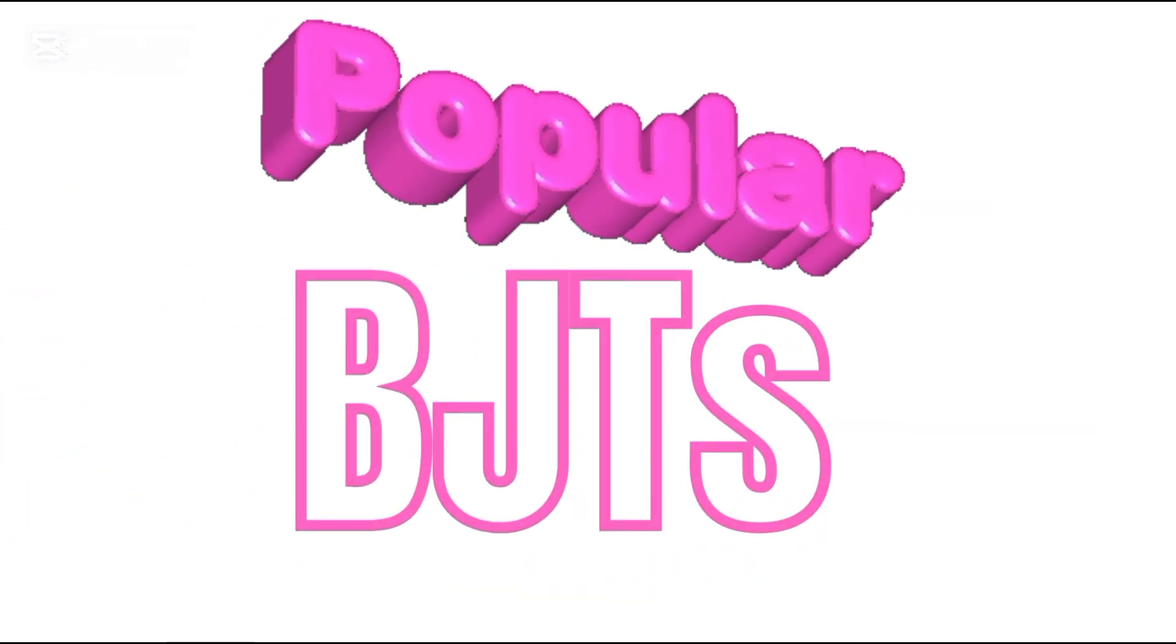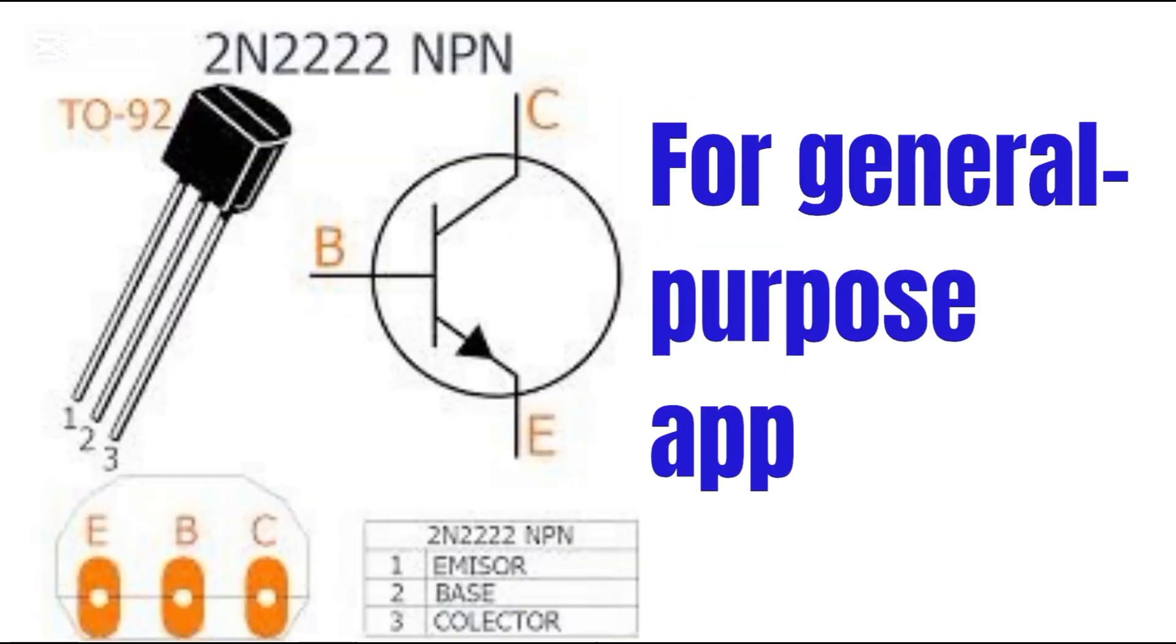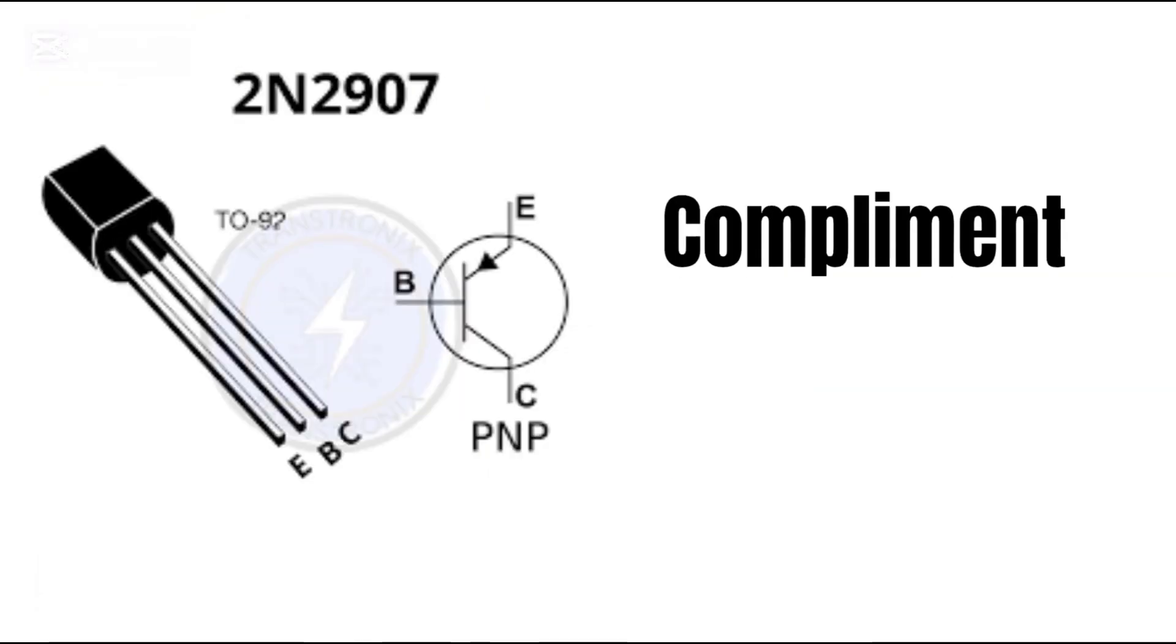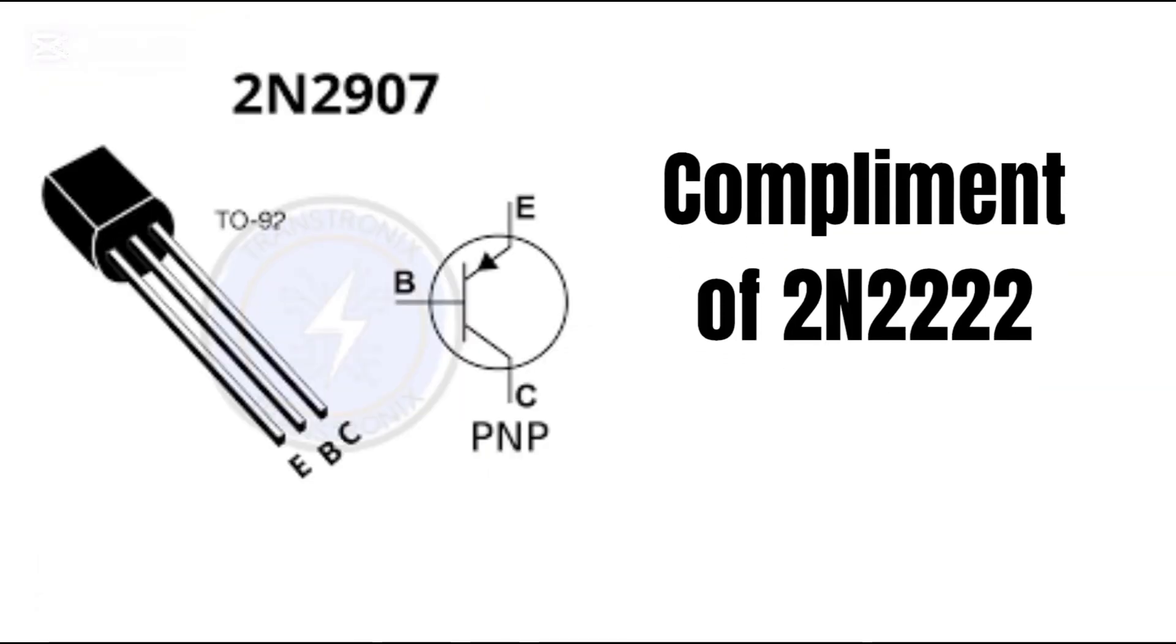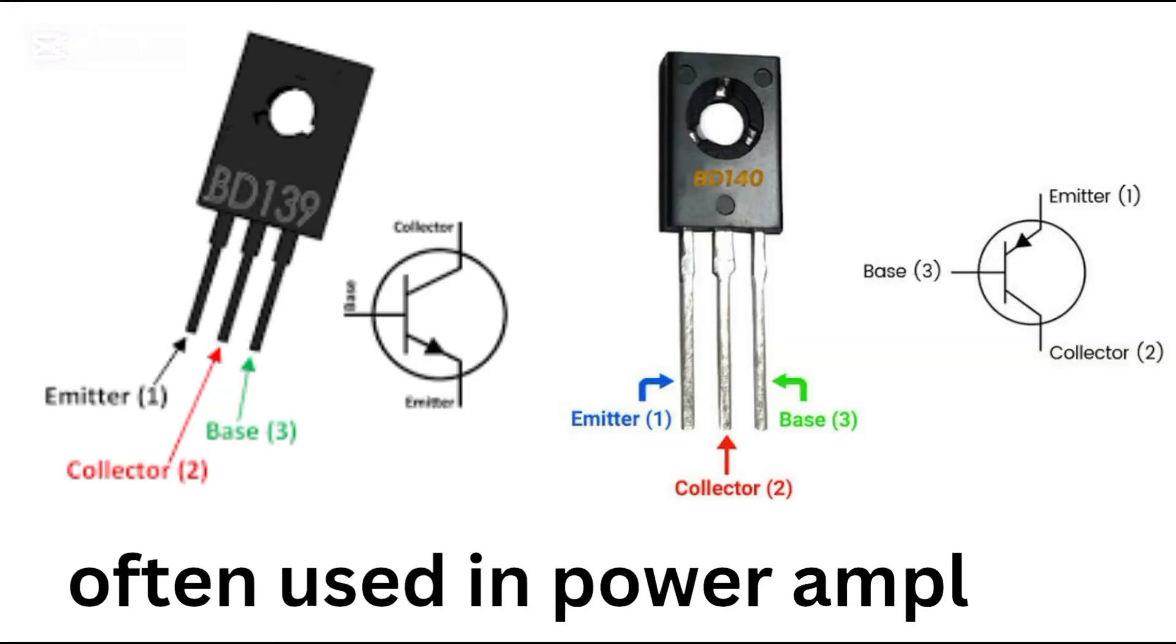Some popular BJTs you might encounter include 2N2222 NPN for general purpose applications, 2N2907 PNP as its complement, TIP31 and TIP32 for medium power applications, and BD139-BD140, often used in power amplifiers.